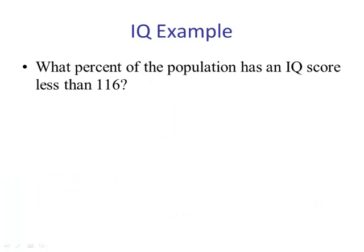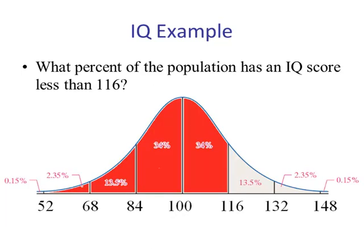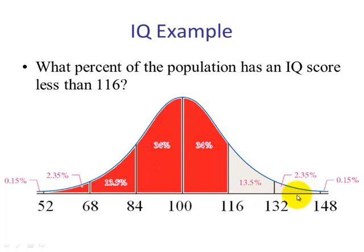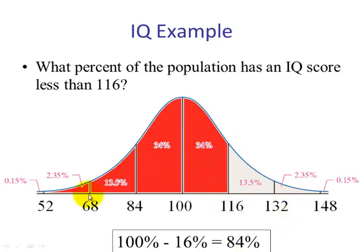What percent of the population has an IQ score less than 116? If we draw the picture and use our previous example, we know that the right tail was 16%. We want to find the probability of being less than 116. The shaded region plus the unshaded region equals 100%. So since I know the right tail is 16%, I take 100% minus 16%, and we see that the percent of IQ scores less than 116 is 84%.